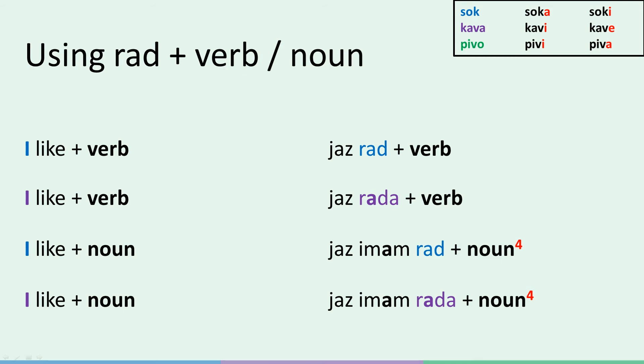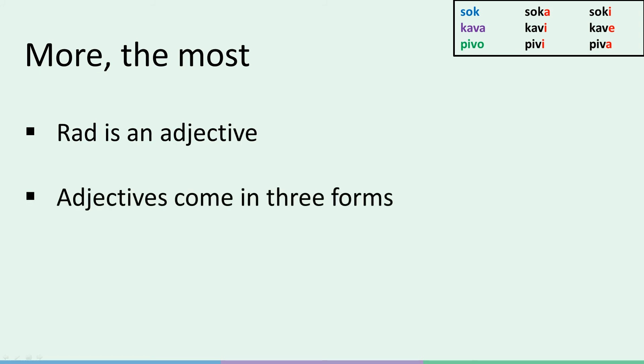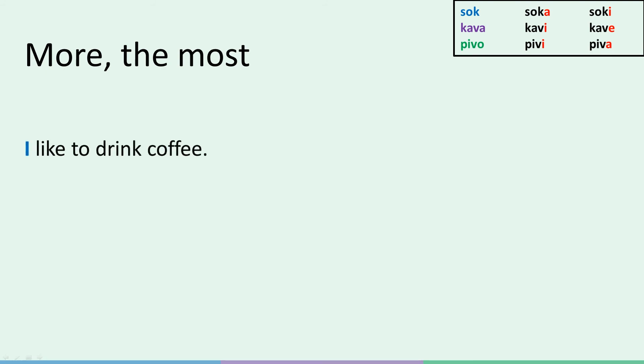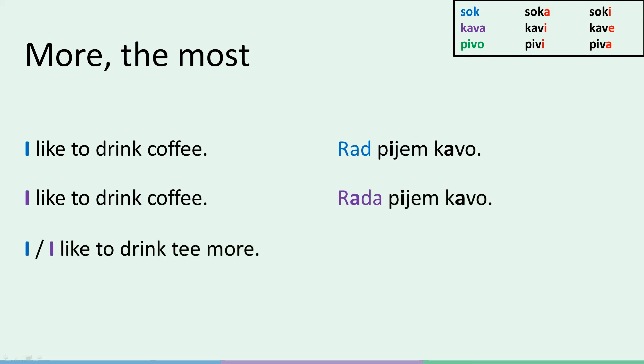One final thing before we end the lesson. Like we said, rad is an adjective, although not your most typical adjective. It still has three different forms — sort of 'to like something', 'to like something more', and 'to like something the most'. A welcome exception is that in the second and third forms — when saying 'more' and 'the most' — it's the same for both males and females. I like to drink coffee: rad pijem kavo. Notice we omitted the word jaz — that's because pijem can only be jaz. If it's not ambiguous, we tend to omit the subject in Slovene quite often. If the I is female: rada pijem kavo. I like to drink tea more: raje pijem kavo. So in rad pijem kavo, we know the person is male. But with raje pijem kavo, it can be a male or a female. Raje is the only option, no matter the gender.